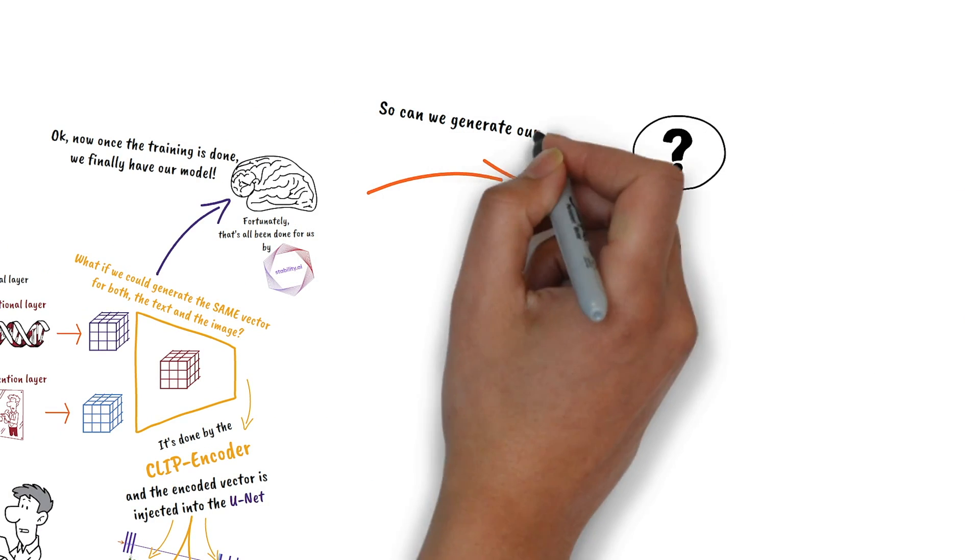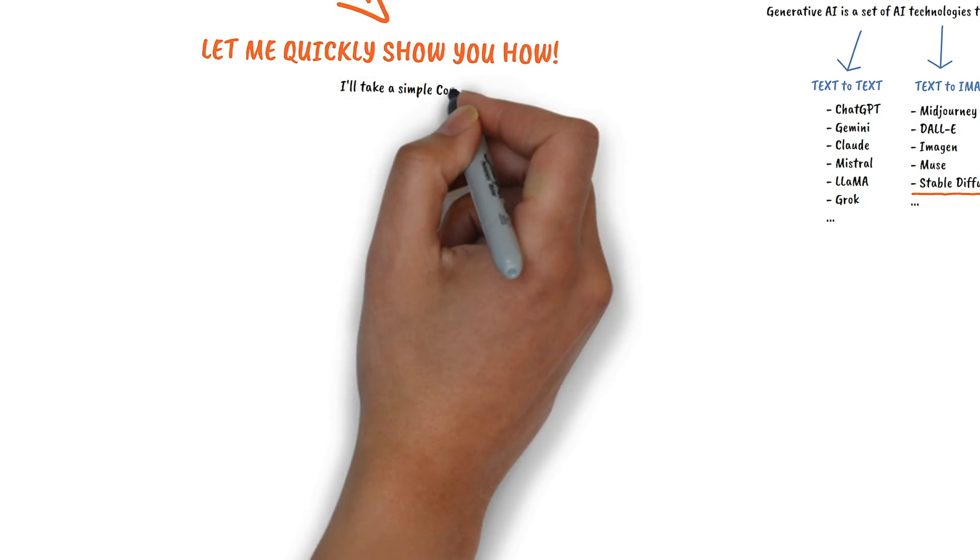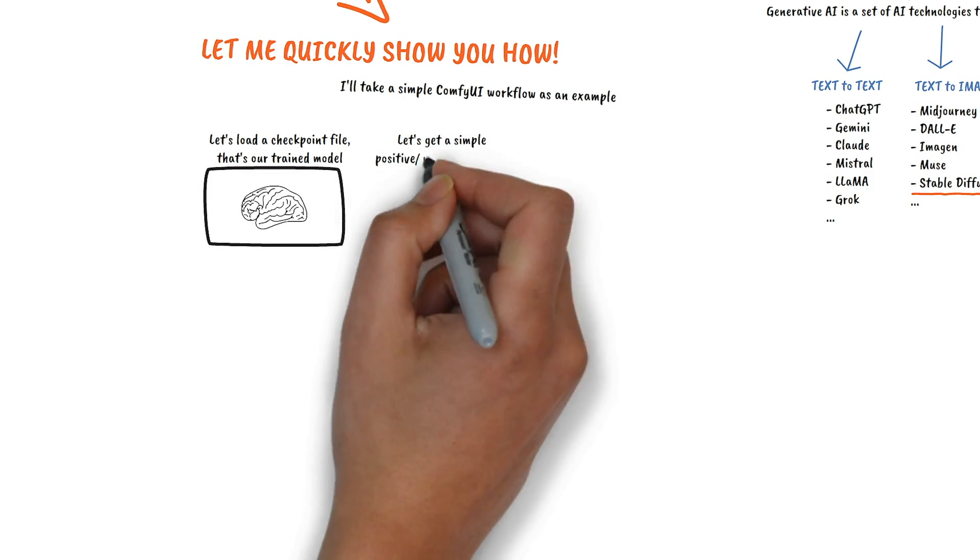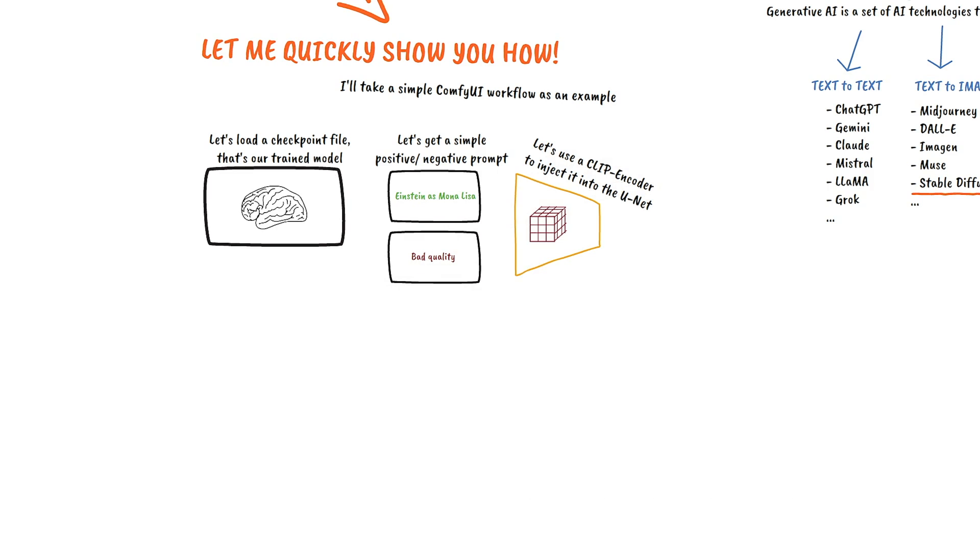Now let me quickly show you how to use the model. Just using a simple comfy UI workflow. So we load our model. We enter a positive and negative prompt. We use a clip encoder to turn it into a vector.